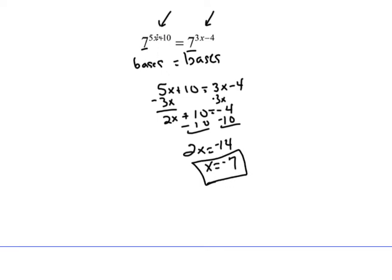And x can be equal to negative 7 because an exponent can be equal to a negative number.